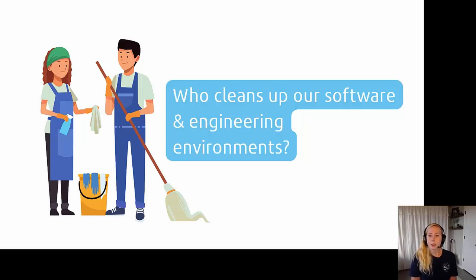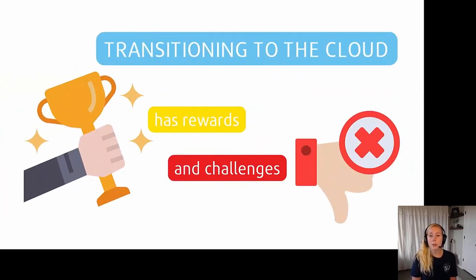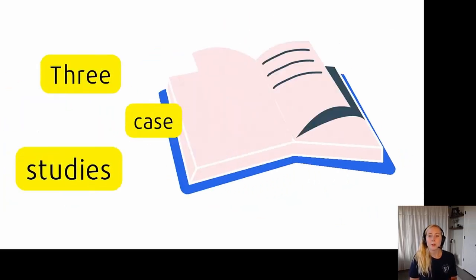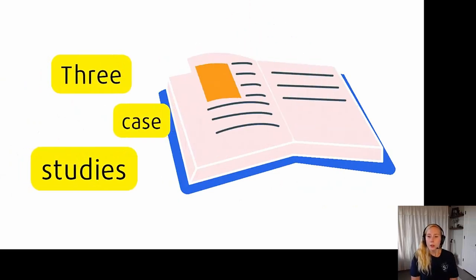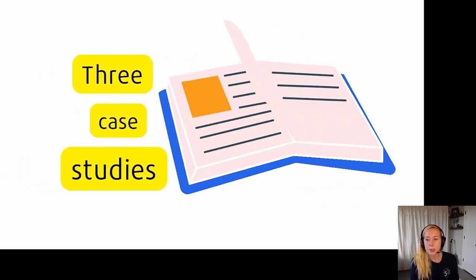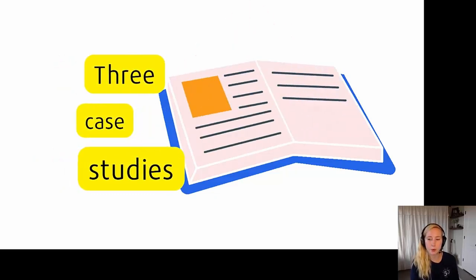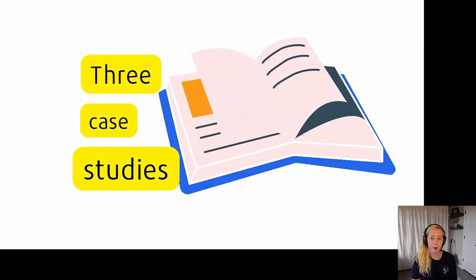I've been part of Boeing's transformation to the cloud and helped a number of development programs transition from legacy environments. During that time, I've experienced all the pain points that come with adapting to new technologies through both failure and success. From this experience, I'd like to present three relatable examples of FOD in the cloud and talk about how to navigate these challenges with your teams when configuring cloud development environments. We're using AWS GovCloud for software engineering at Boeing, so the examples here will be specific to AWS, but the principles apply to other cloud offerings as well.